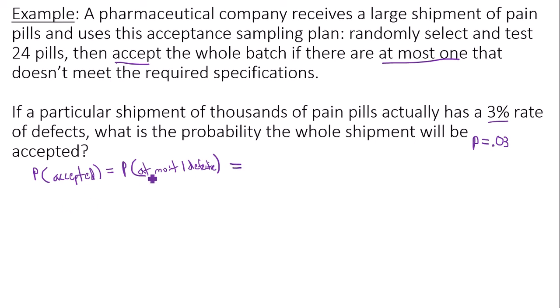So at most one means either zero or one pill is defective. If that happens, we will accept the shipment. If there are two, three, four, and so forth, then the shipment is going to be rejected.